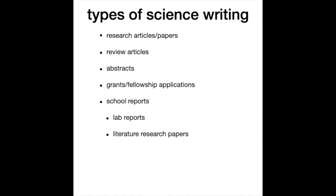There are also literature research papers, which are kind of like baby review articles. You're not doing wet lab research at the bench; instead you're finding information about a topic that you might be assigned or get to choose, and then doing research in the literature — reading papers and that sort of thing, which is a big deal — and then writing a report for your teacher.